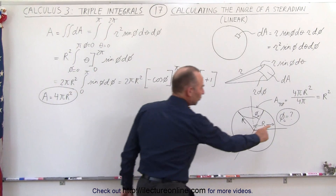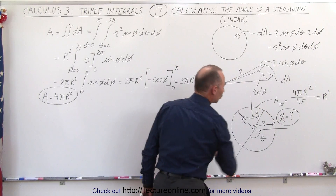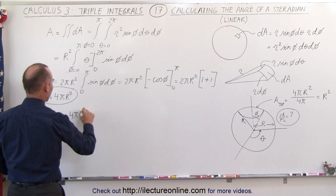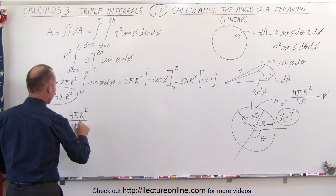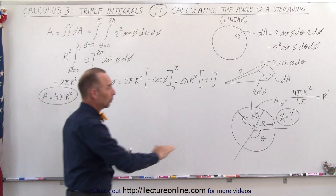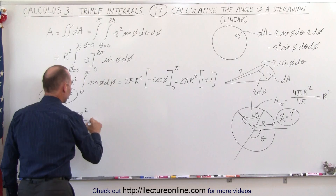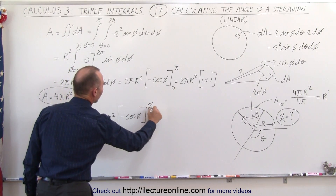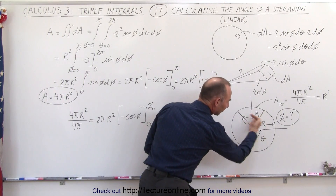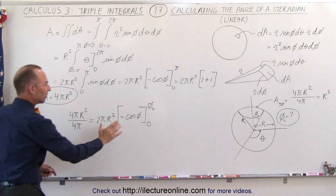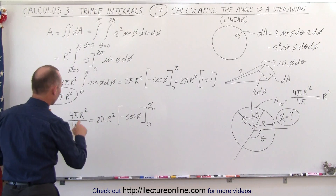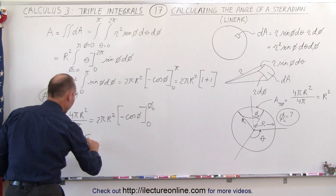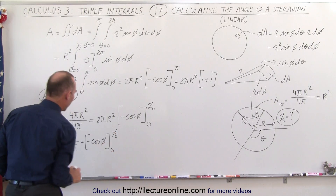Next, what I'm trying to do is find out what angle gives an area of r². So we take the full surface area of the sphere, 4π r², and divide that by 4π. This gives us r², the area corresponding to one steradian, and we set that equal to 2π r² times minus cosφ evaluated from 0 to the angle we're looking for — the linear angle that gives us the size of a steradian. We then divide both sides by 2π r², giving us 1/(2π) on the left side.